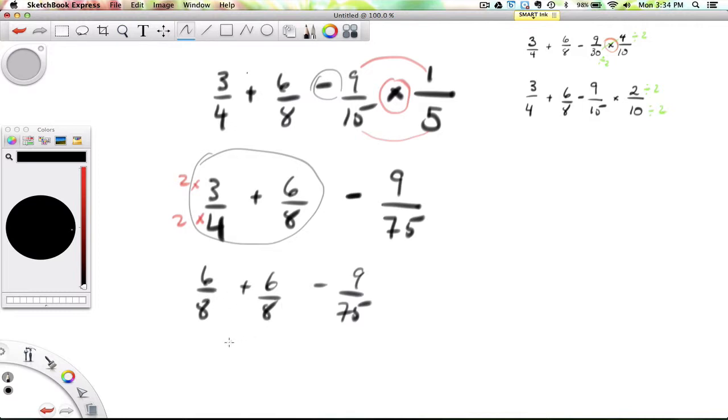And 6 over 8 plus 6 over 8 is 12 over 8 minus 9 over 75.